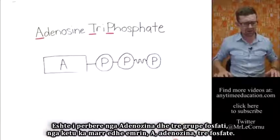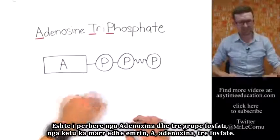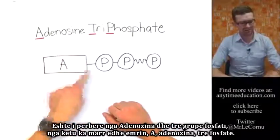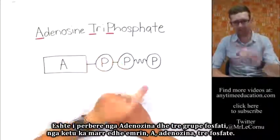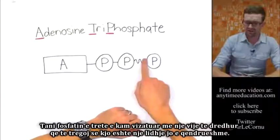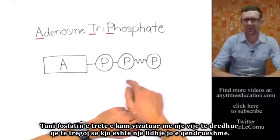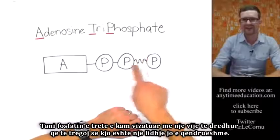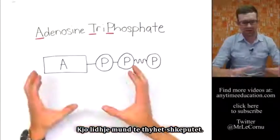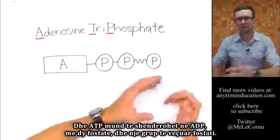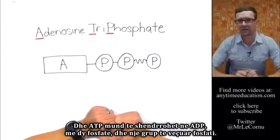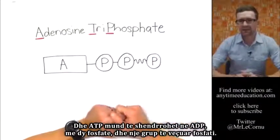It's made up of adenosine and three phosphate groups — that's where it gets its name: adenosine tri, meaning three, phosphates. Now the third phosphate has a squiggly line drawn there to indicate that it is an unstable bond. That bond can be broken and ATP can be converted into ADP, diphosphate, and an extra phosphate group.